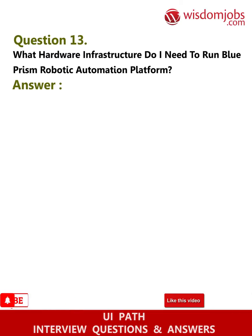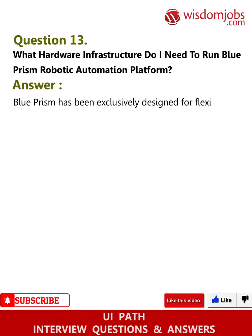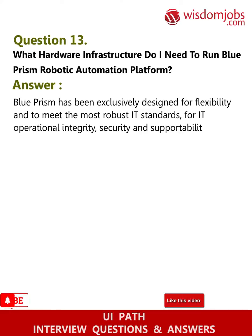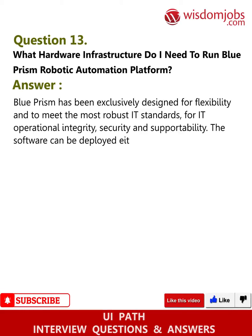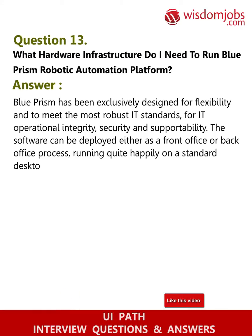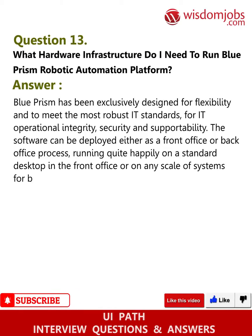Question thirteen: What hardware infrastructure do I need to run the Blue Prism robotic automation platform? Answer: Blue Prism has been exclusively designed for flexibility and to meet robust IT standards of operational integrity, security, and supportability. The software can be deployed as a front-office or back-office process, running on a standard desktop in the front office or on any scale of systems for back-office processing.